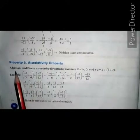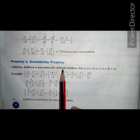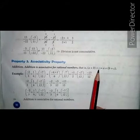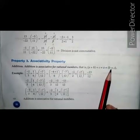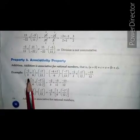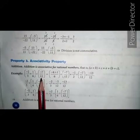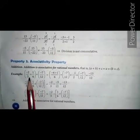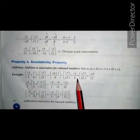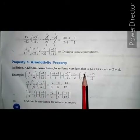Property 3: associative property for addition. Addition is associative for rational numbers. That is, (a plus b) plus c equals to a plus (b plus c). For example, let a equals to minus 2 upon 3, b equals to 1 upon 6, and c equals to minus 7 upon 12. On solving bracket a plus b, that is minus 2 upon 3 plus 1 upon 6, we get minus 1 upon 2. Then adding c, which is minus 7 upon 12, we get minus 13 upon 12 on the left hand side.